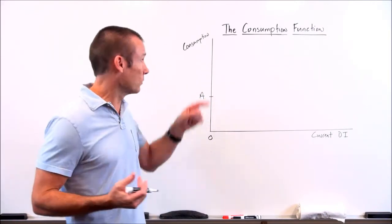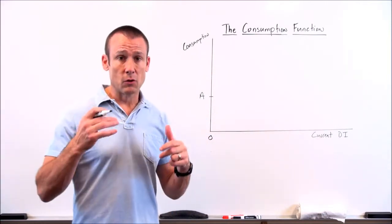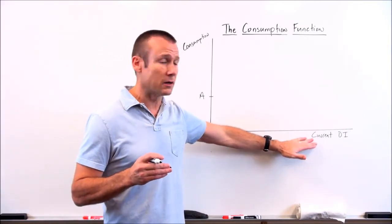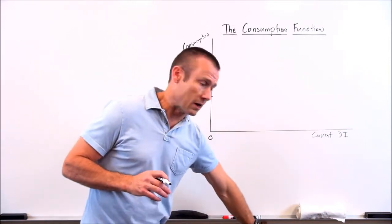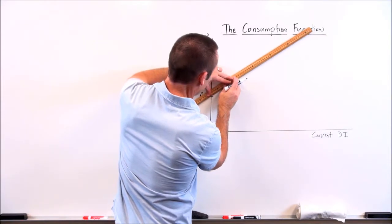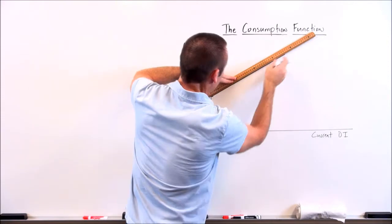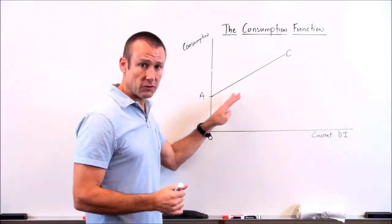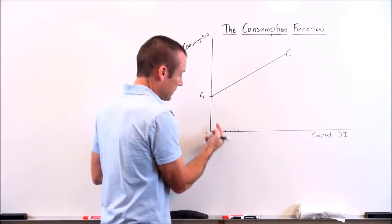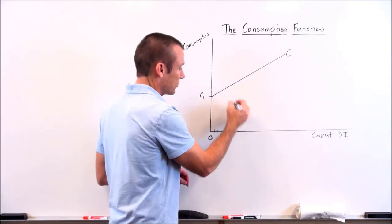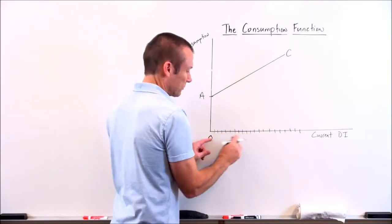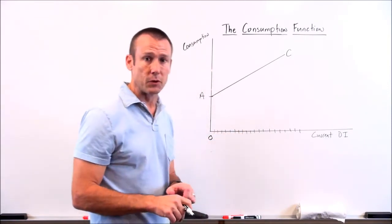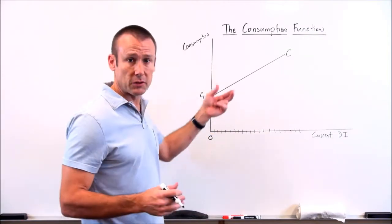Now I'm going to put the consumption function on the graph. What's going to be the relationship between these variables? This relationship is direct — when our disposable income goes up, our consumption goes up, so we're going to get a positively sloped line. I'm going to grab my yardstick to draw the line. That is our consumption function line, and I'm going to title it C for consumption. These vertical distances from the horizontal axis to the consumption function represent our amount of consumption at each level of disposable income.